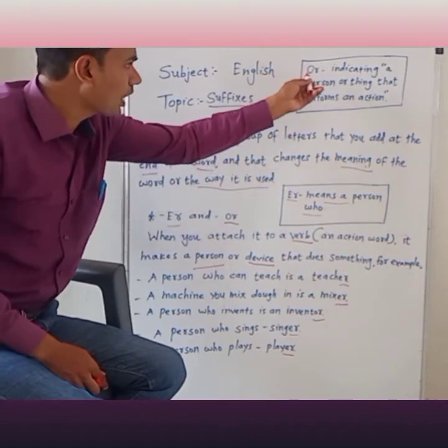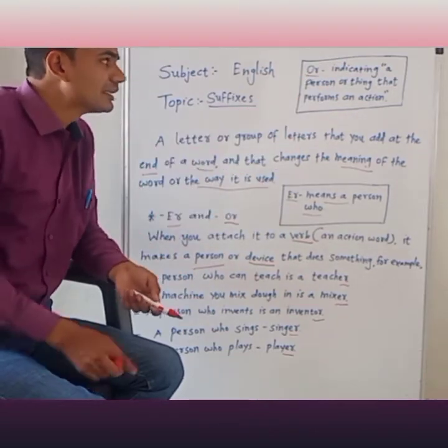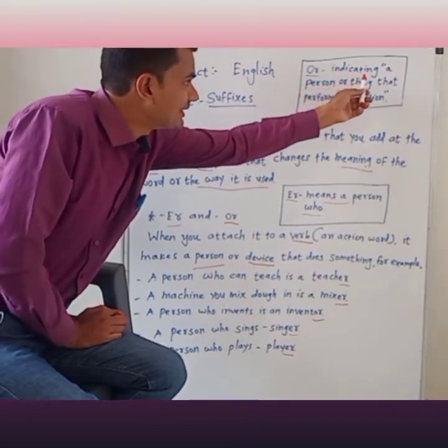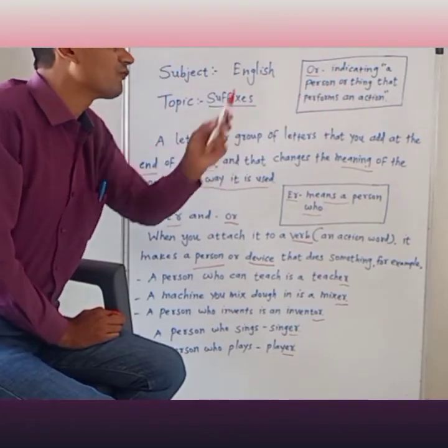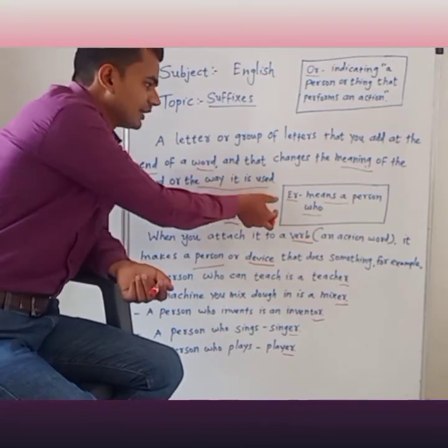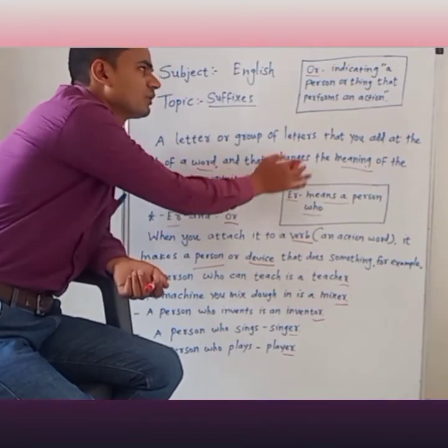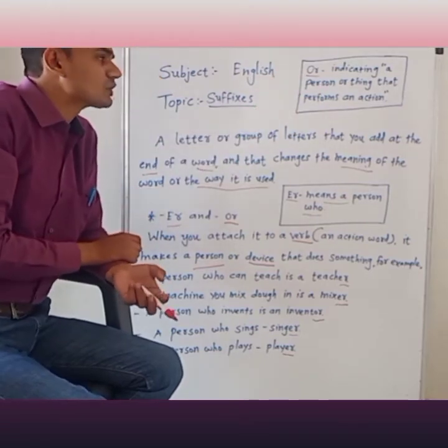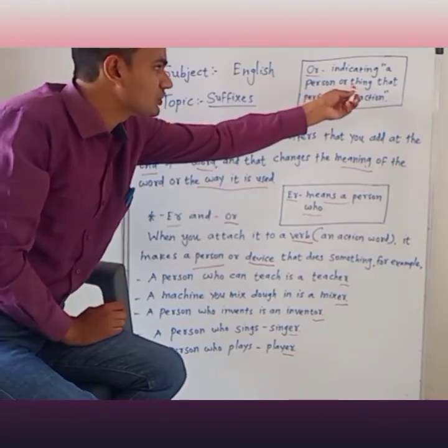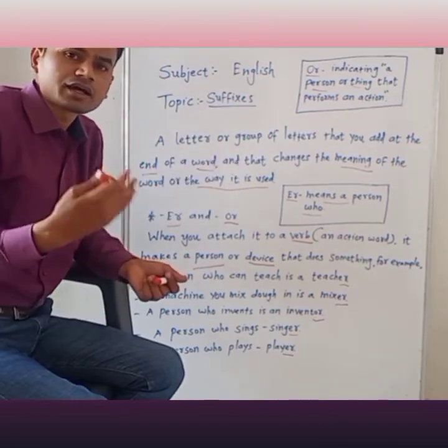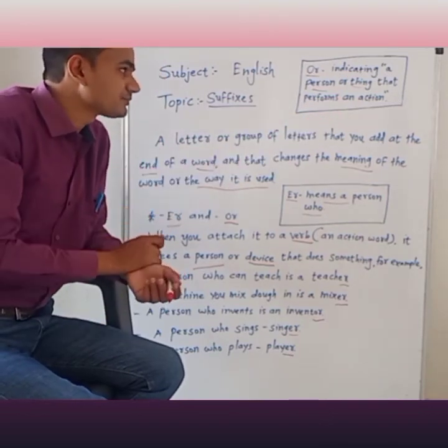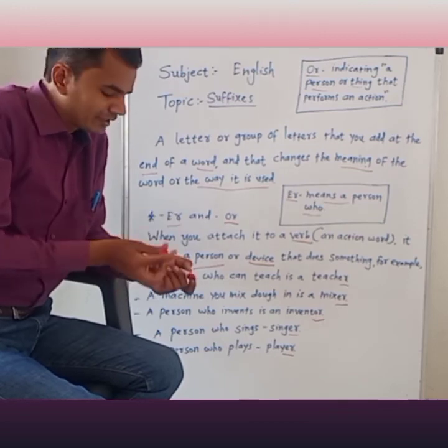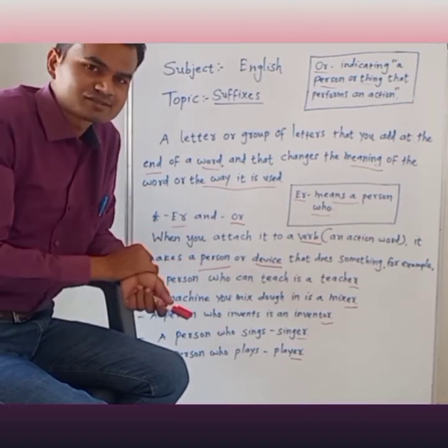Now see, we will continue on that or suffix. It indicates a person or thing that performs an action. That is similar to er only. This is also the or suffix that is the same as the person or thing that performs an action. This is what the or suffix is. Thank you very much.